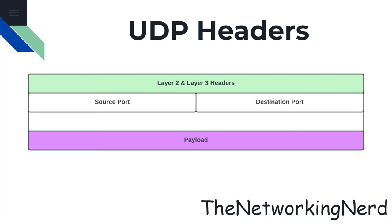The destination port identifies the port number of the receiving application or process and helps the receiving host determine which application or service should receive the UDP datagram. The length header specifies the total length of the UDP datagram, including the header and data in bytes, and it enables the receiver to determine the size of the incoming datagram so that it can extract the data accurately.